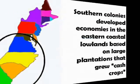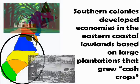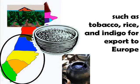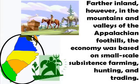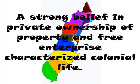Southern colonies developed economies in the eastern coastal lowlands based on large-scale plantations that grew cash crops such as tobacco, rice, and indigo for export to Europe. Further inland, however, in the mountains and valleys of the Appalachian foothills, the economy was based on small-scale subsistence farming, hunting, and trading. There was a strong belief in private ownership of property and free enterprise characterized in colonial life.